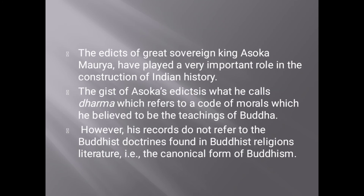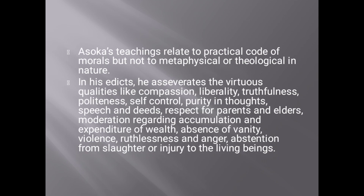The edicts of the great sovereign king Asoka Maurya have played a very important role in the construction of Indian history. The edicts of Asoka Maurya contain what he calls Dharma, which refers to a code of morals which he believed to be the teachings of Buddha. However, his records do not refer to the Buddhist doctrines found in Buddhist religious literature — the canonical form of Buddhism.